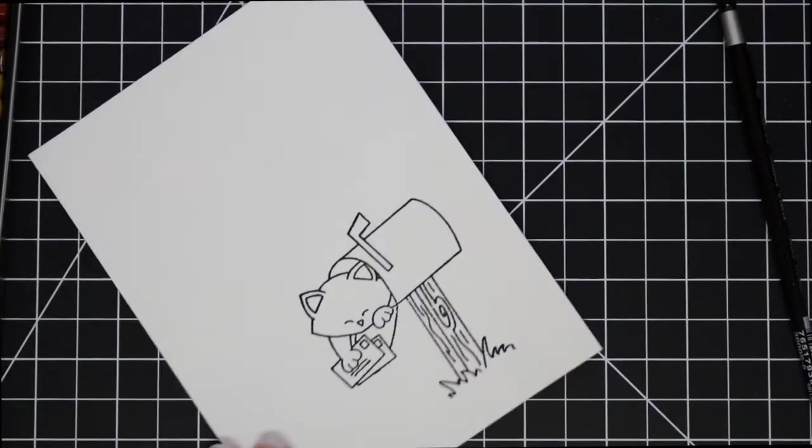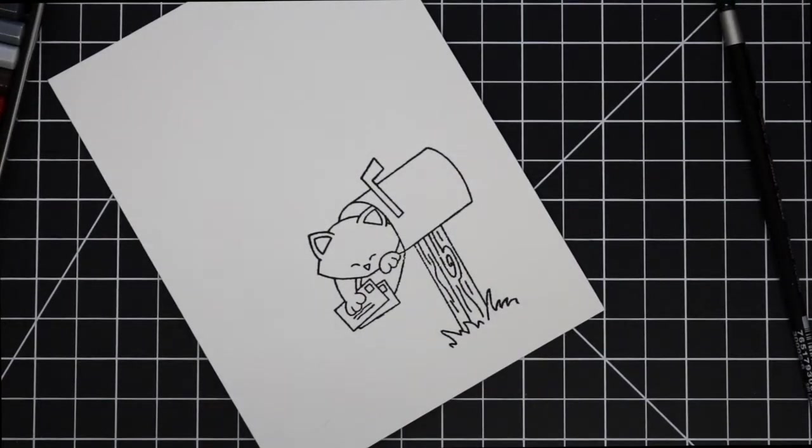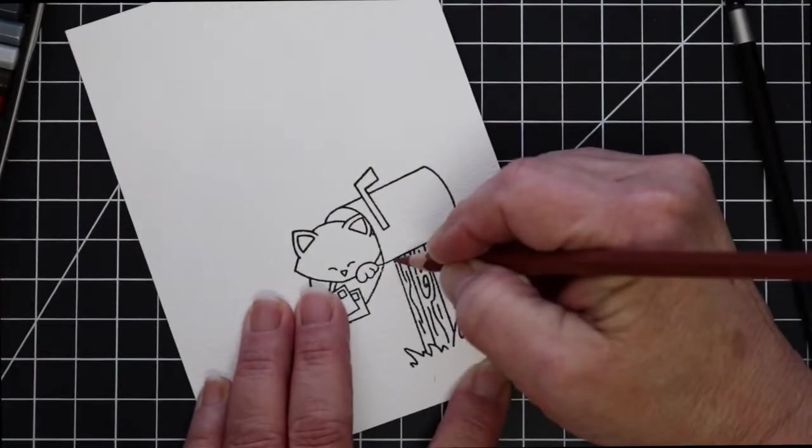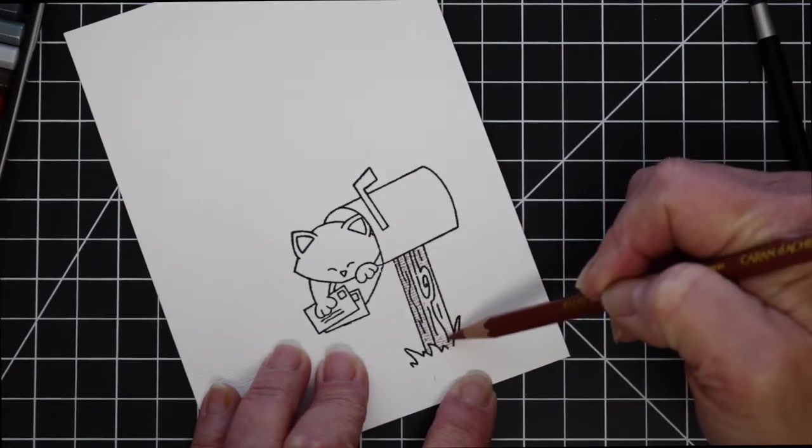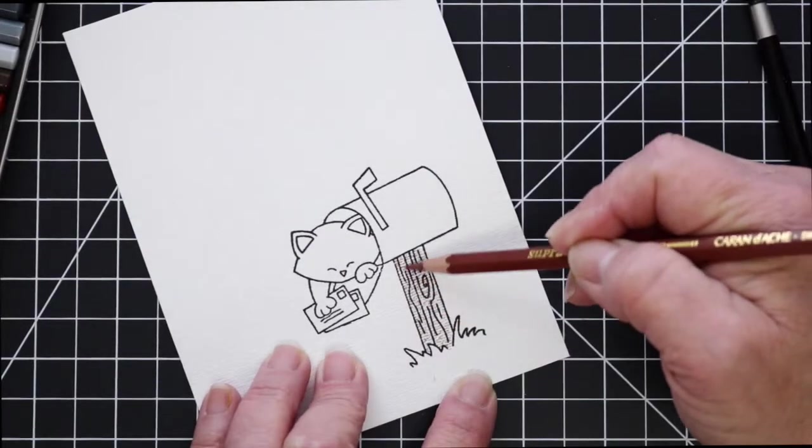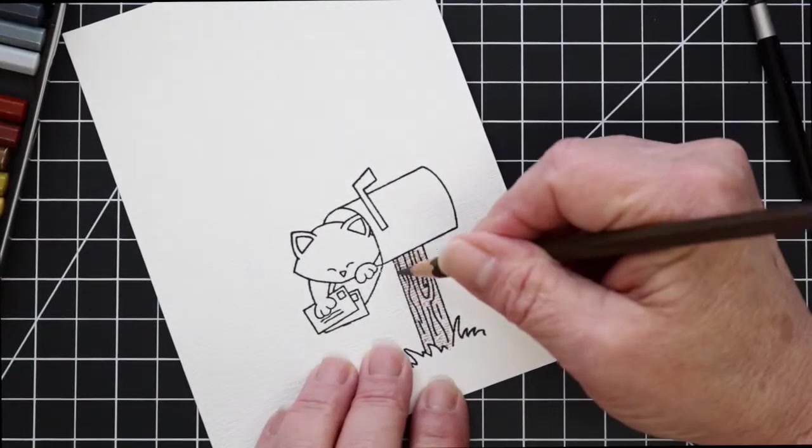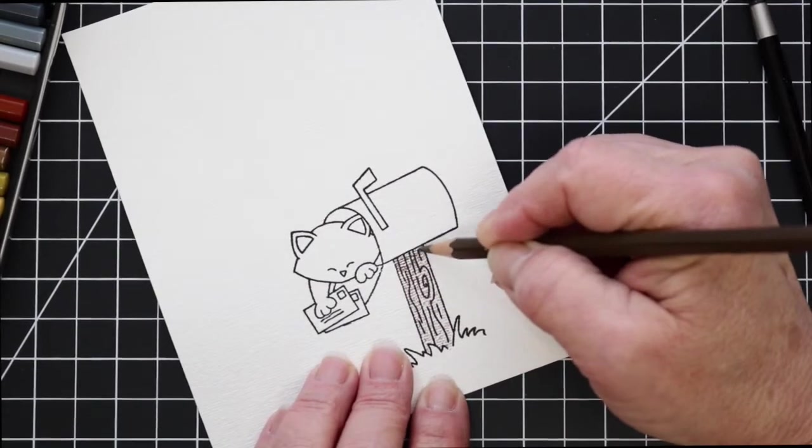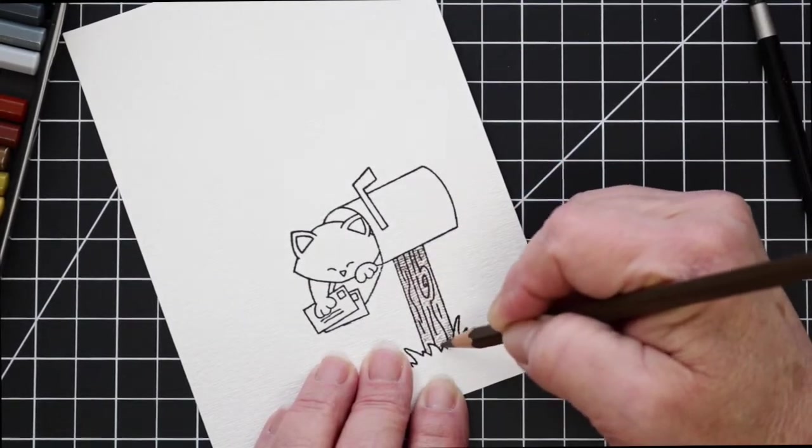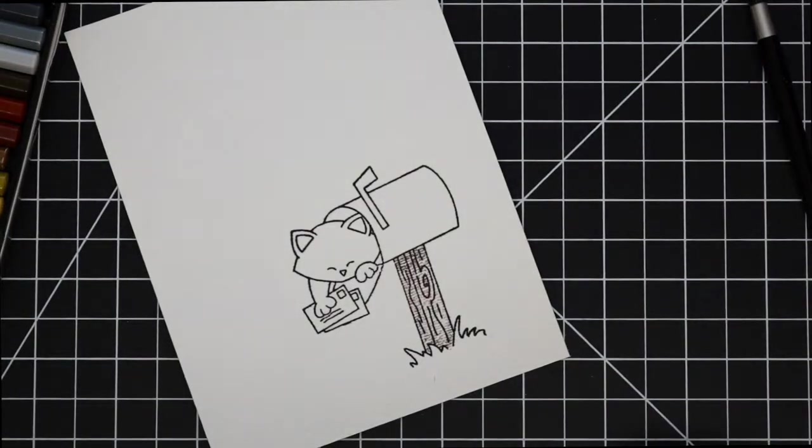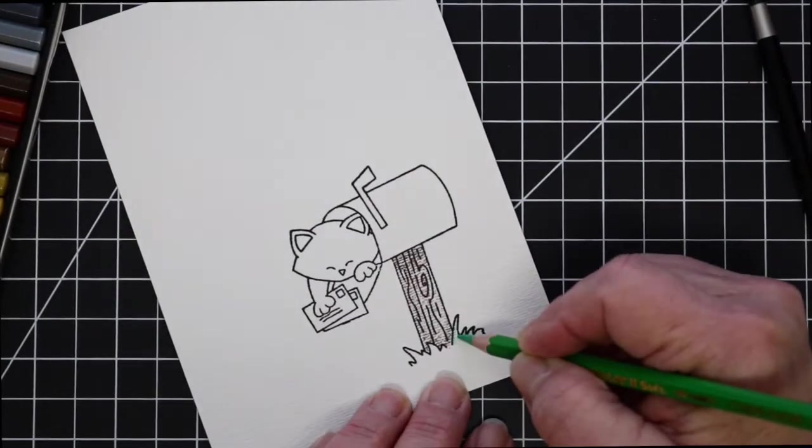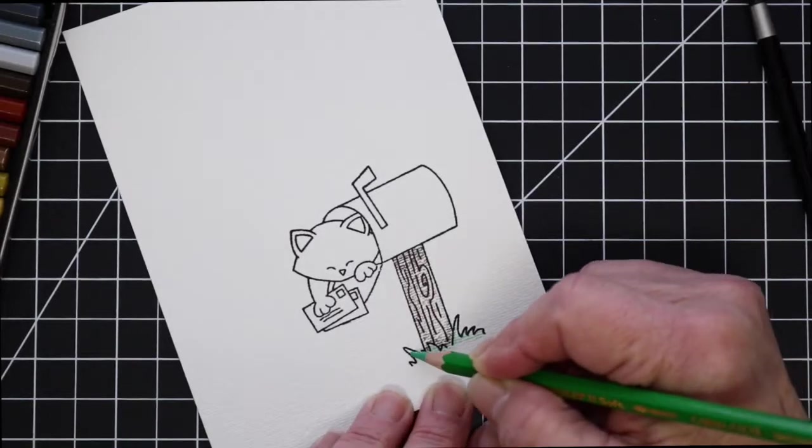Now I'm going to be using my Caran d'Ache super color watercolor pencils and I'm just going to scribble in color. I'm going to do the mailbox post in some browns and we'll use a couple of greens for the grassy area and some blues for the mailbox.